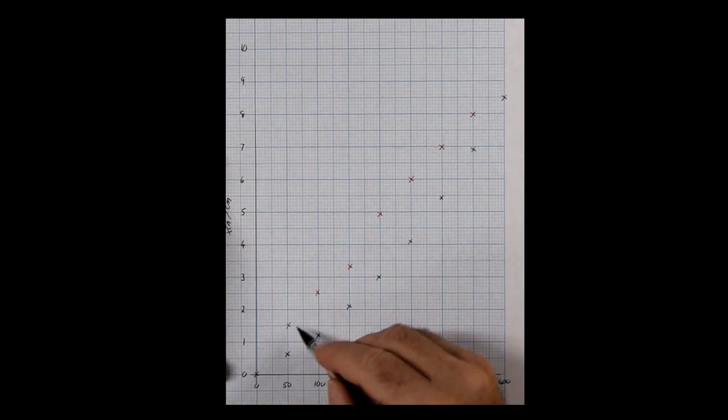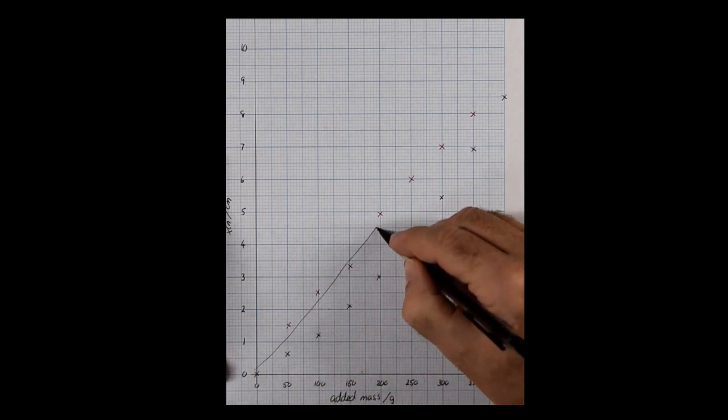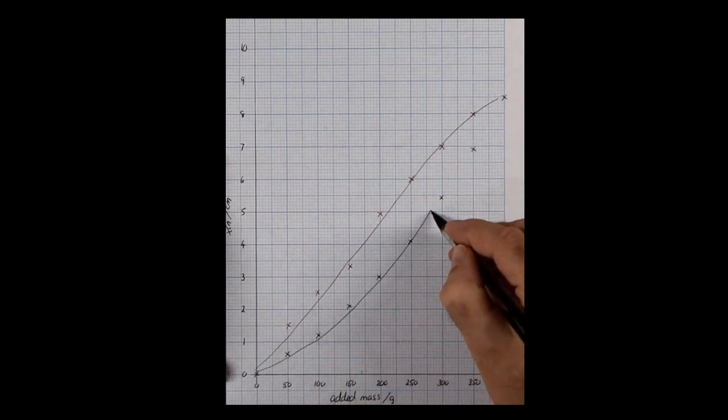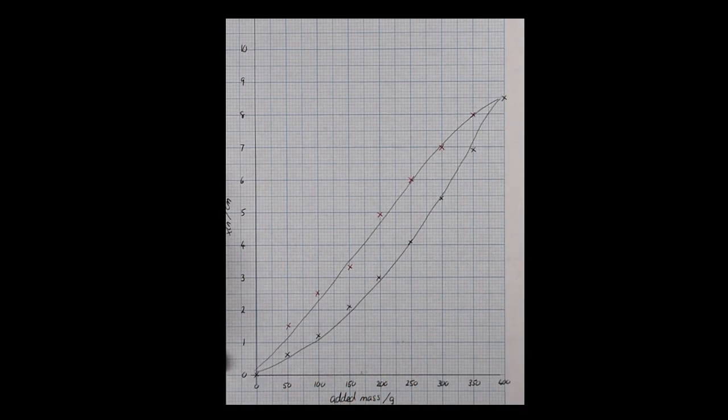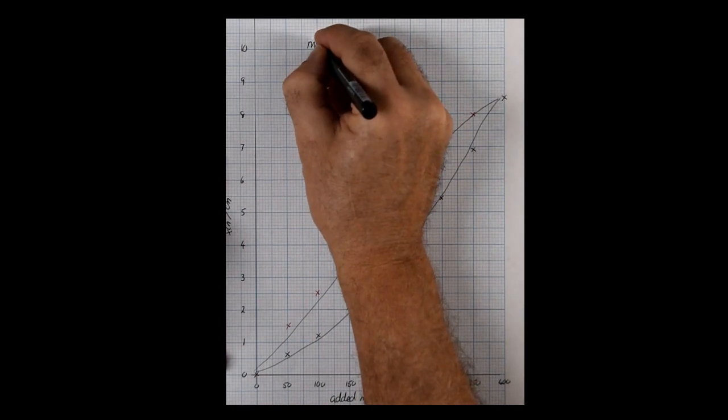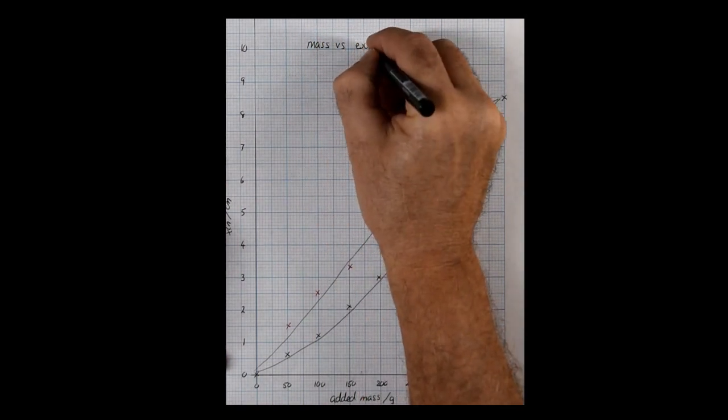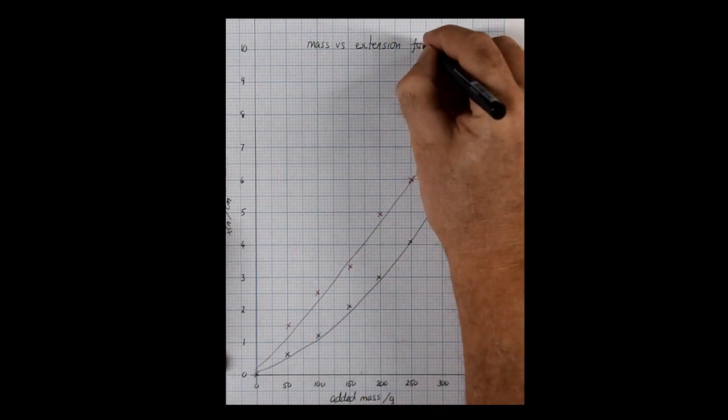A line of best fit shows a typical hysteresis curve, typical for an elastic band. And this area between the two curves is the amount of energy used up in heating the band when you stretch it.